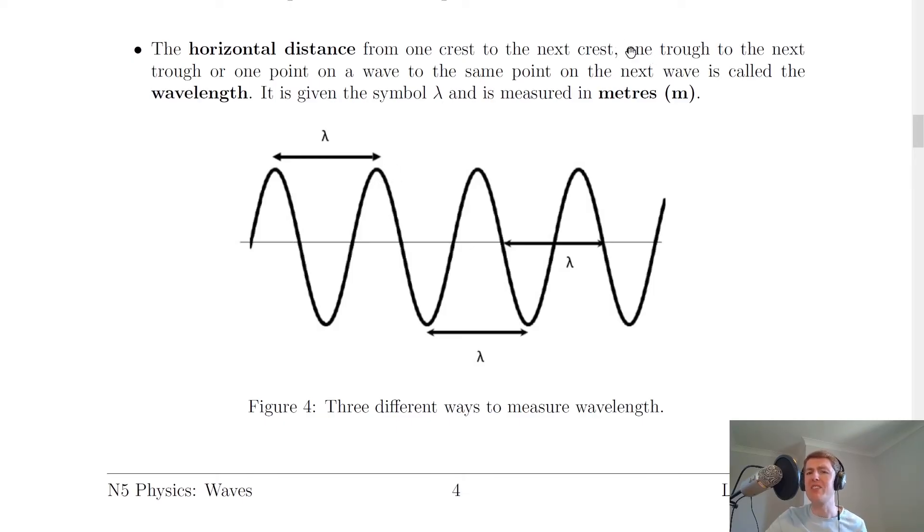But we can also define wavelength as the distance from one trough to the next trough. So if we go down here, for example, there's one trough and there's the next trough. So that is also one wavelength.